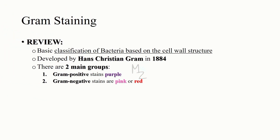Other bacteria like Rickettsia stain with Giemsa or other tissue stains but do not stain with the gram stain. As a quick recap: gram staining is a basic classification of bacteria based on their cell wall structure. It was developed by Hans Christian Gram, a Danish bacteriologist or physician, in 1884 in the morgue of a hospital in Berlin.